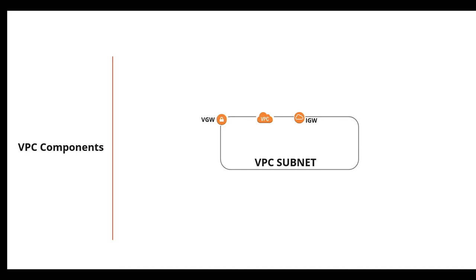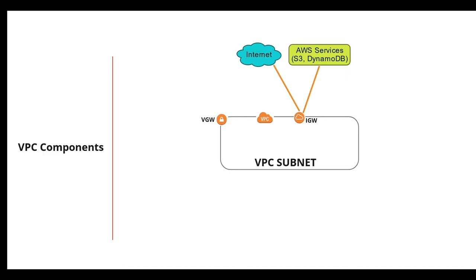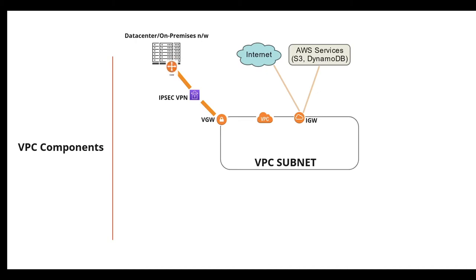Summarizing connectivity: using an Internet Gateway you can talk to the internet or AWS services like S3 and DynamoDB, but this traffic leaves the AWS network. To keep traffic within AWS, use VPC endpoints. To connect to an on-premise data center, establish an IPSec VPN between your VPC and the data center using a Virtual Gateway or Transit Gateway on the AWS side and a Customer Gateway on the customer side.